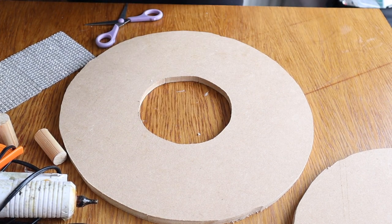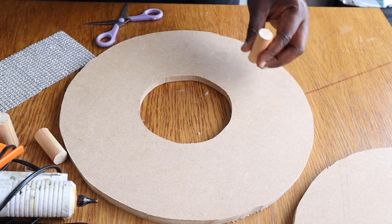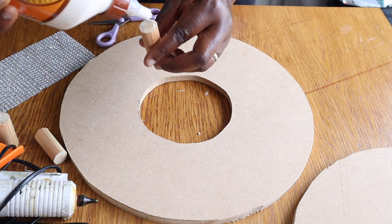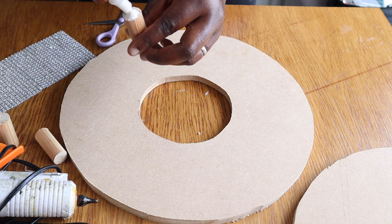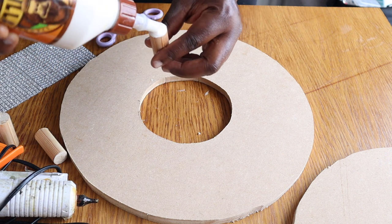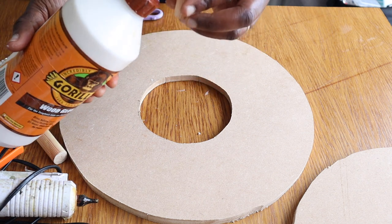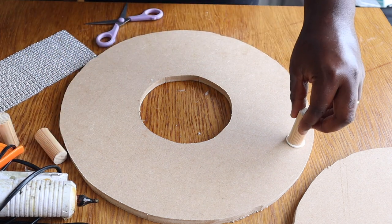So to make the cake stand I glued my spacers around the board, the bottom board with a hole in the middle. So I put my wood glue and then I'm sticking it down.